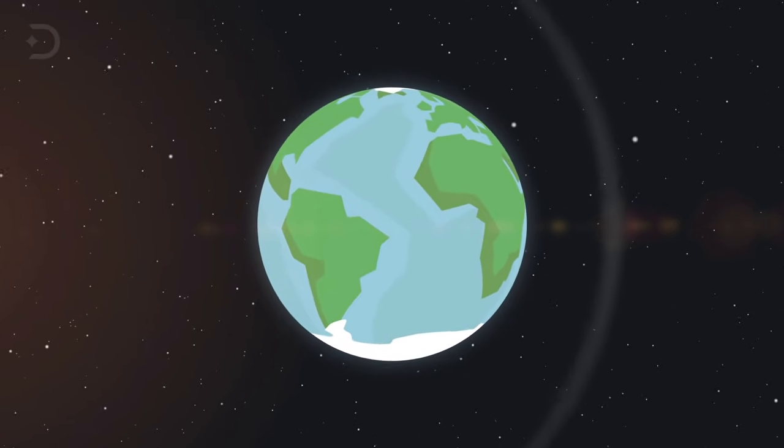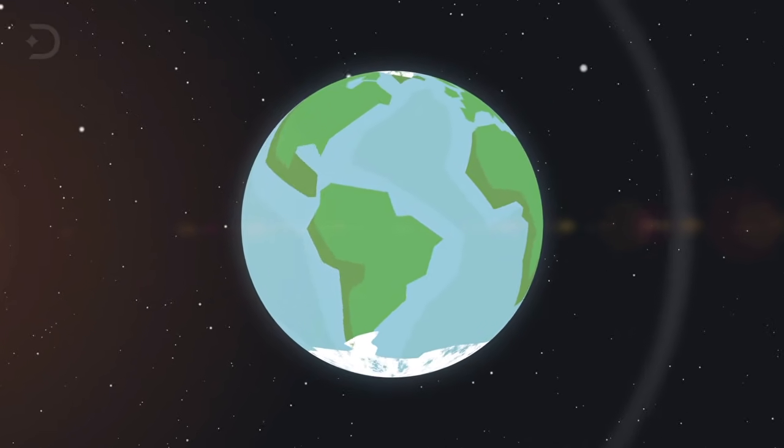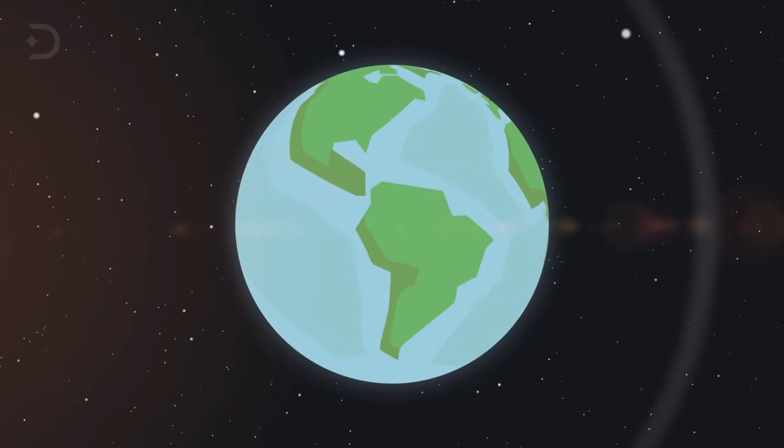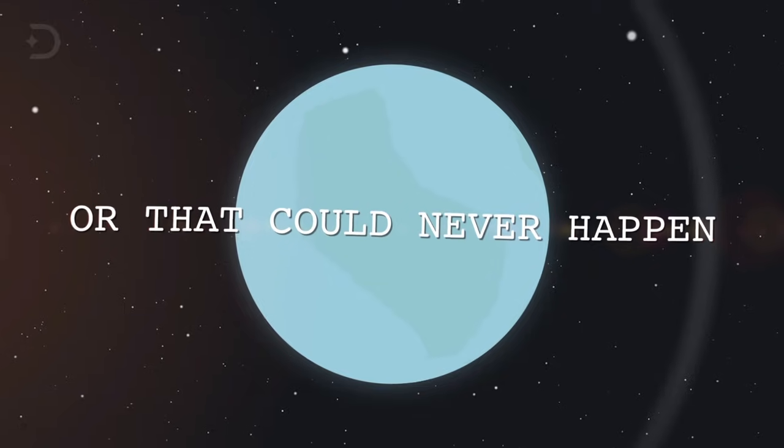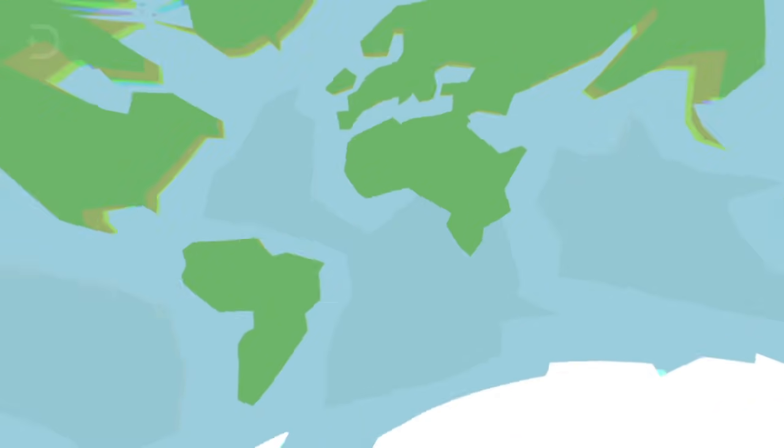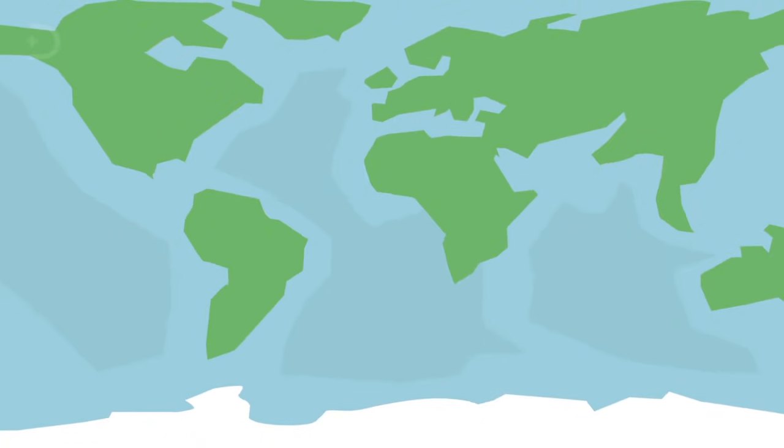Many people have wondered what would happen if all the glacial ice on the planet melted. Some believe that it would be a water world with no land in sight, while others think that could never happen. But the Earth is changing in more ways than you might think on its own.